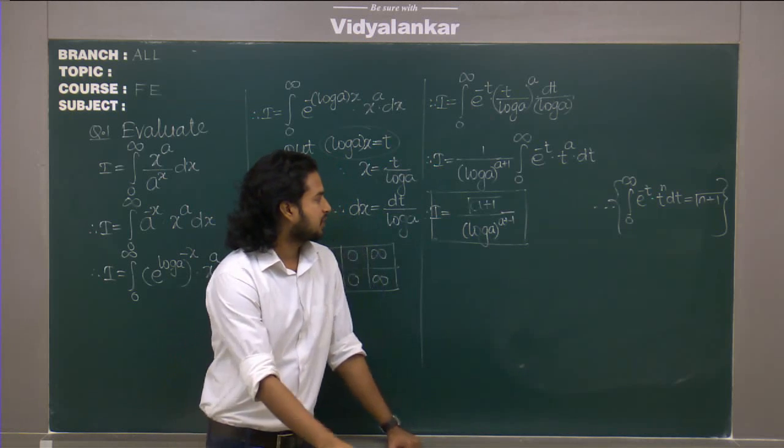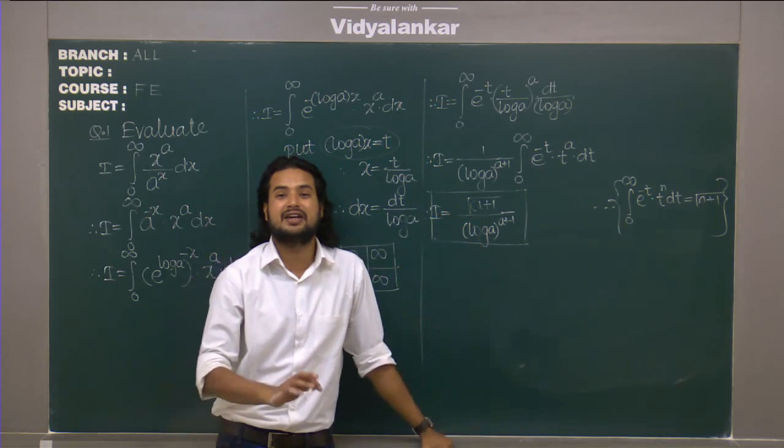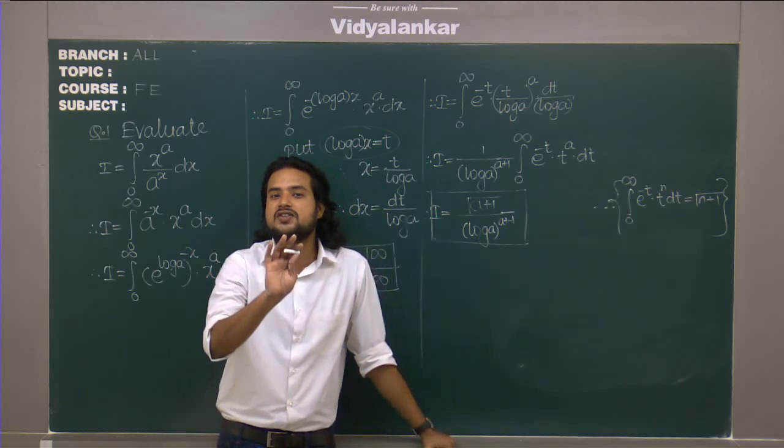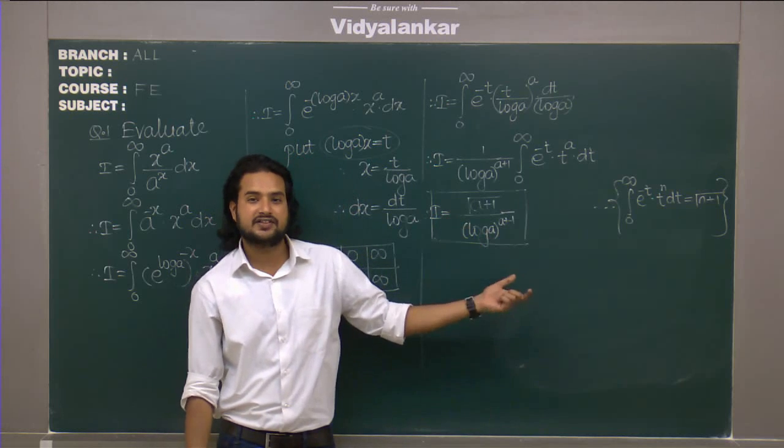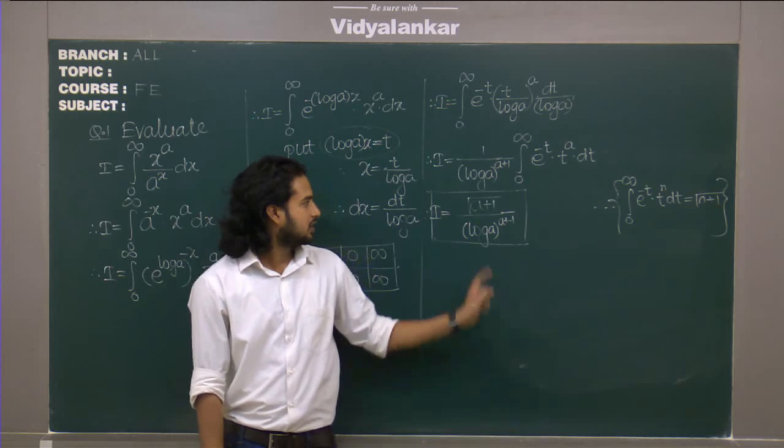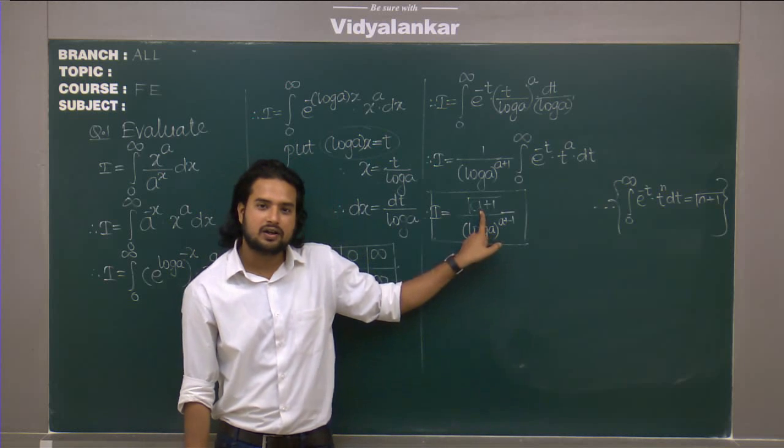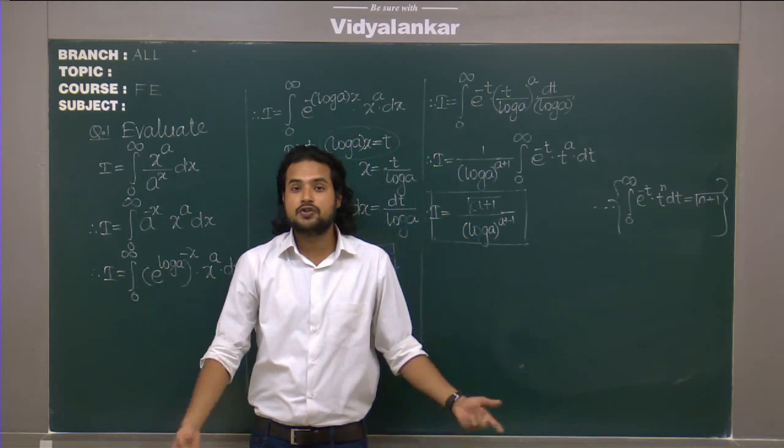Now few people do this way, they don't leave answer here they write a plus 1 gamma as a factorial. I won't suggest you to do that because gamma can be written as n factorial only if n is an integer. Is this a an integer? No we are not aware. a can be anything. I can form thousands of questions. So that's the beauty of mathematics too.